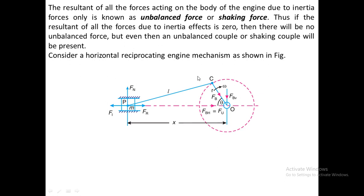In the case of reciprocating masses, there are two unbalanced factors. The first is the unbalanced force, which is generated due to the inertia of every part. The second is the unbalanced couple or shaking couple. These two factors generate vibration in the engine. Balancing of reciprocating masses means minimizing the effect of these unbalanced forces and the unbalanced couple.